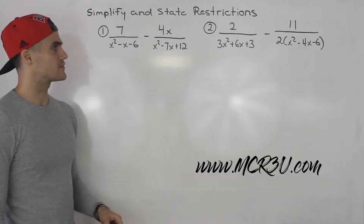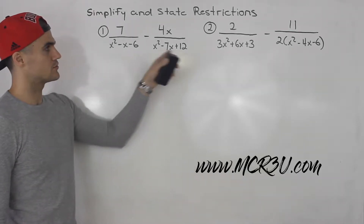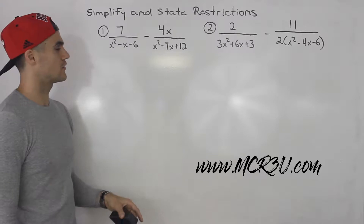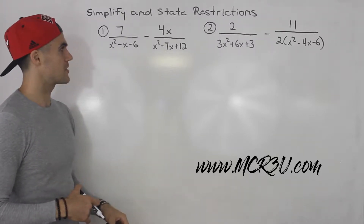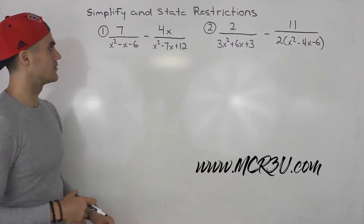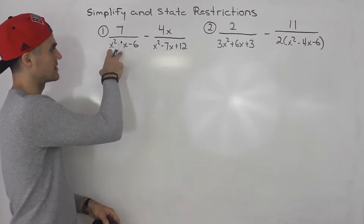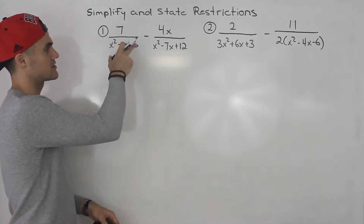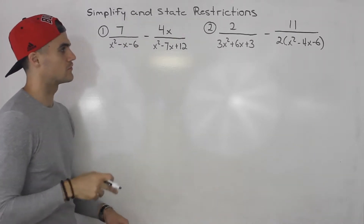Welcome back everybody. In this video we have two questions to solve where we're adding and subtracting rational expressions. Starting off with number one, we have seven over x squared minus x minus six, minus four x over x squared minus seven x plus twelve.